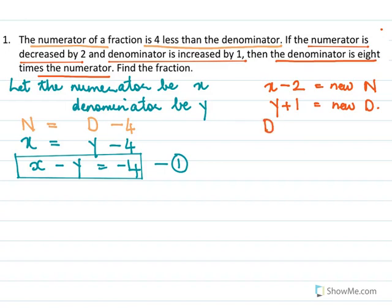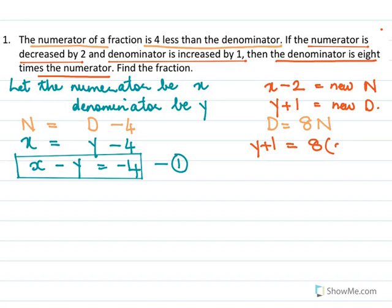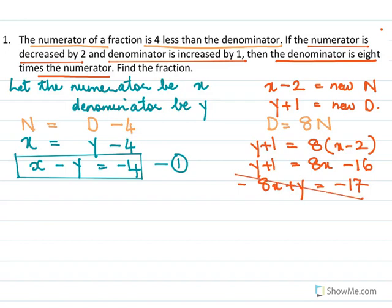Then the denominator is 8 times the numerator. The denominator is y plus 1, so y plus 1 equal to 8 times (x minus 2). Opening the bracket: y plus 1 equal to 8x minus 16. Bringing all x and y terms to one side: minus 8x plus y equal to minus 17.